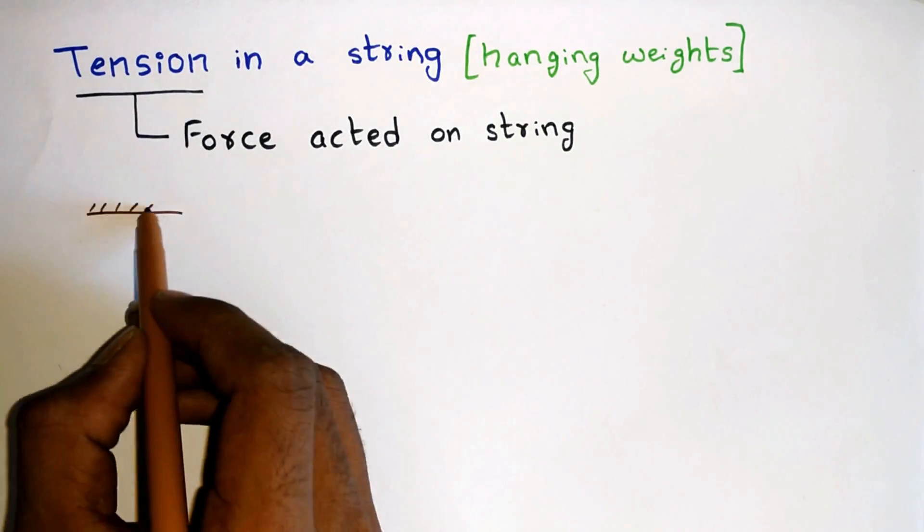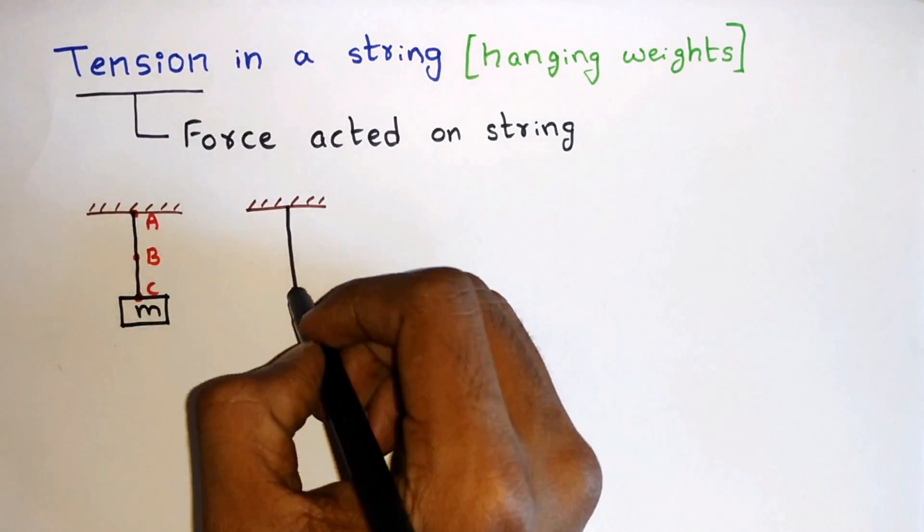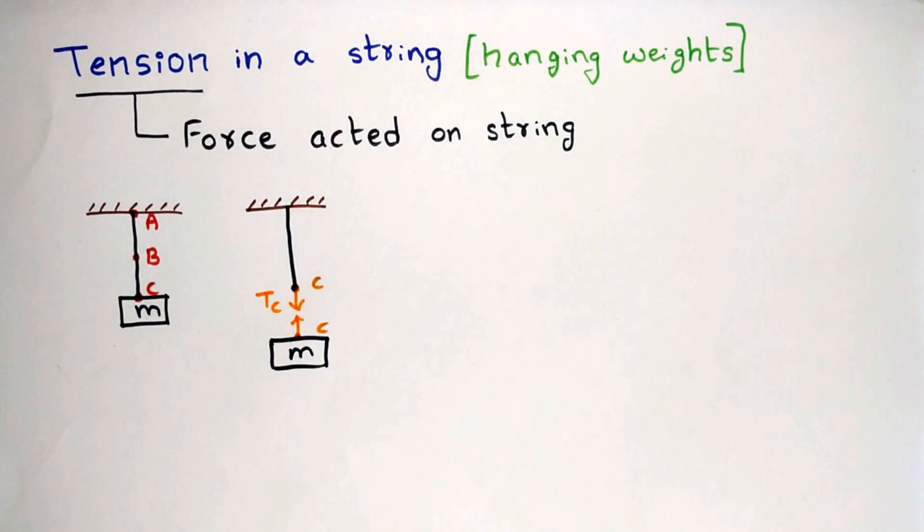Now let's consider a mass m hanging on a string from a fixed support and consider 3 points a, b, c on the string. Now at point c, let the tension be Tc. Since the tension is the force which is supporting the mass from falling down, therefore we can write Tc equals mg.